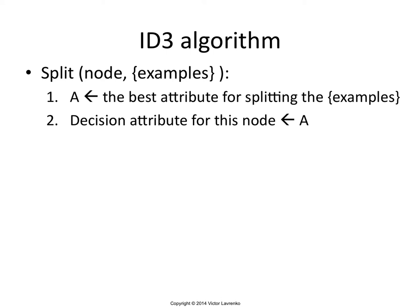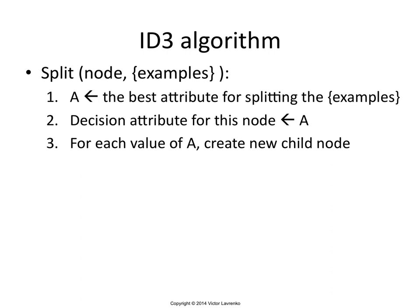This attribute has a number of possible values it can take. You use that attribute A for the current node in the tree, and if this attribute has three possible values, you create three children for the current node — maybe sunny, rainy, and overcast, the three children of the current node.